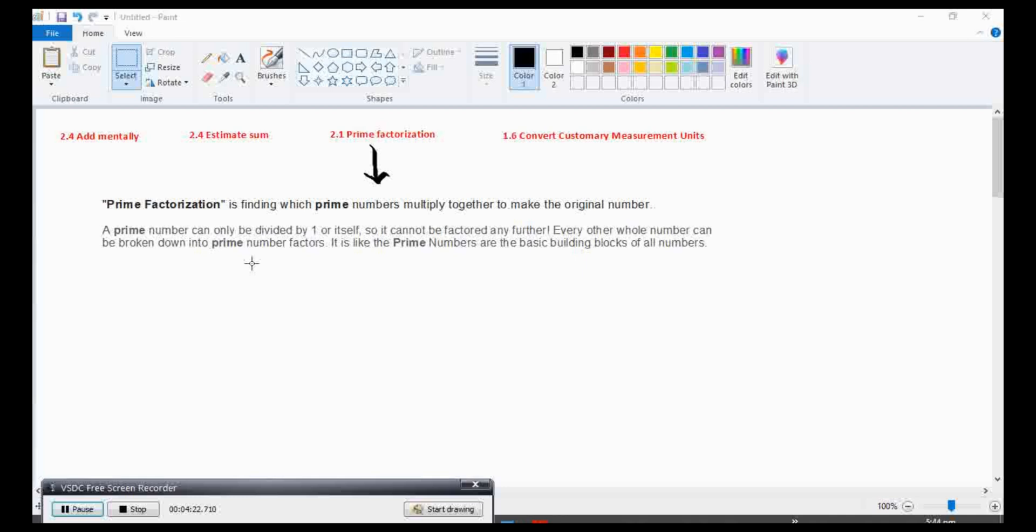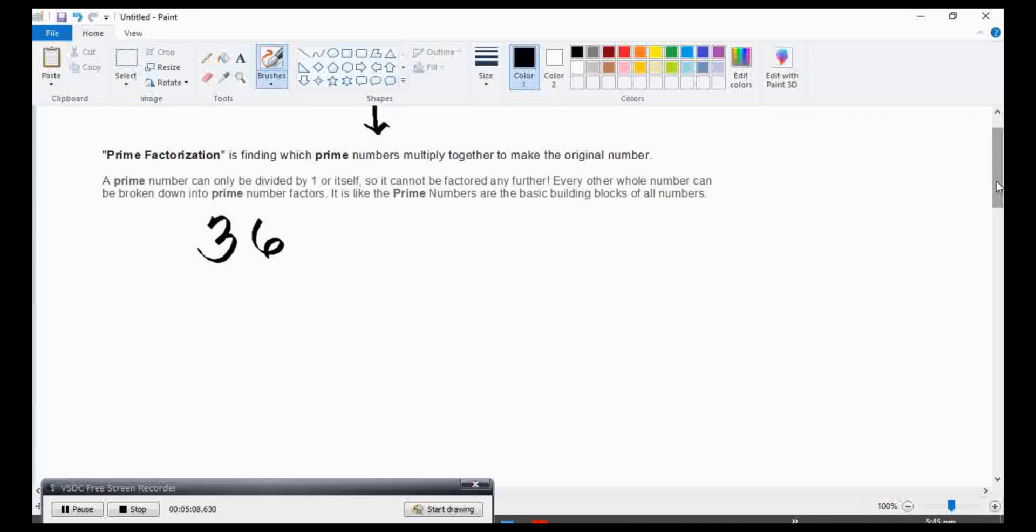Good day, grade 5. Today, we will discuss prime factorization and prime numbers. Prime factorization is finding which prime numbers multiply together to make the original number. A prime number can only be divided by one or itself, so it cannot be factored any further. Every other whole number can be broken down into prime number factors. It is like the prime numbers are basic building blocks of all numbers.